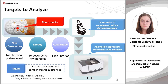Let's take a look at the workflow of contaminant analysis in FTIR. If you find an abnormal part in a sample, first collect it and observe it with a stereomicroscope. Check the condition and the shape of the contaminant. Then determine the appropriate instrument and methods for analysis.